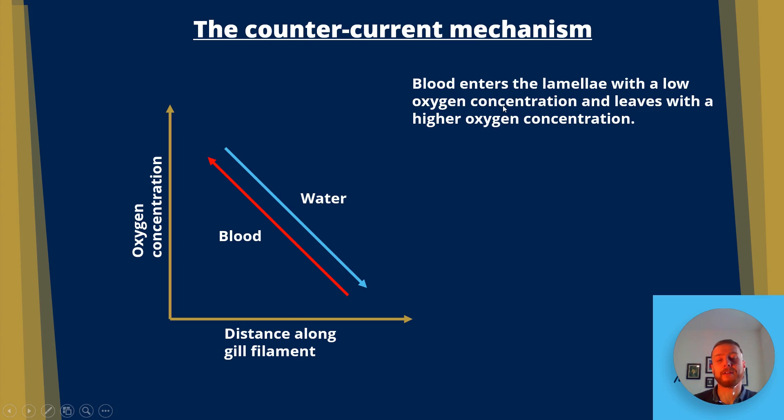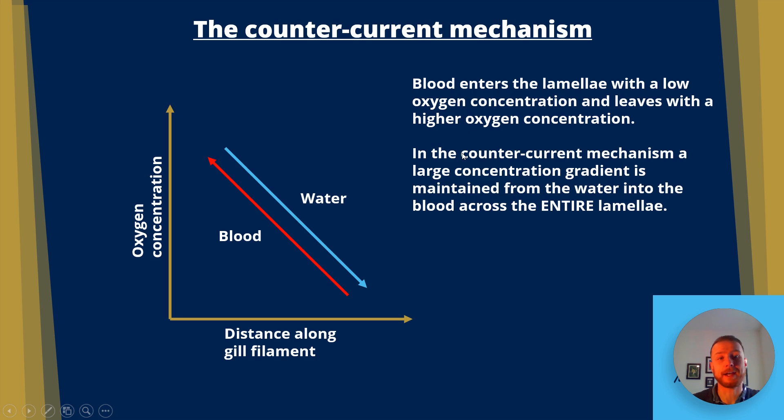So a couple of notes on that. Blood enters the lamellae with a low oxygen concentration and leaves with a higher oxygen concentration. In the countercurrent mechanism, a large concentration gradient is maintained from the water into the blood across the entire lamellae of the gill filament.